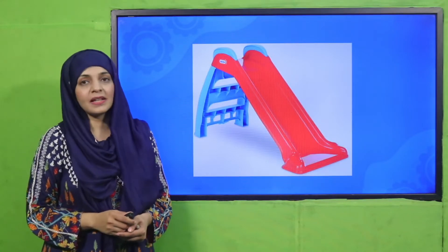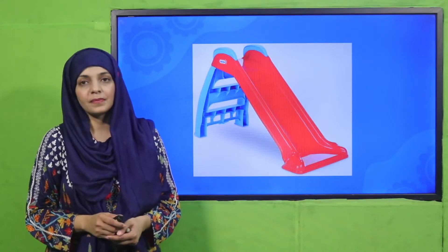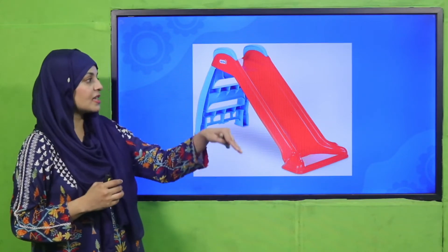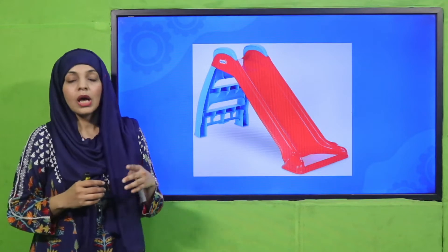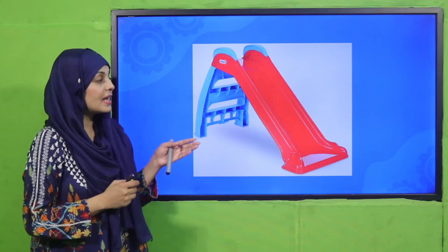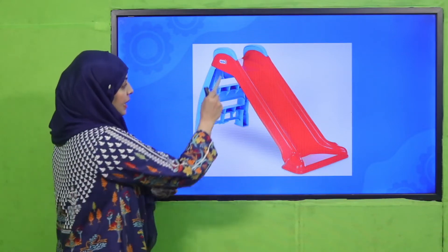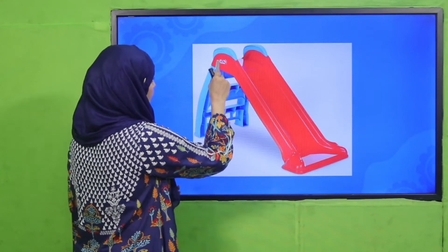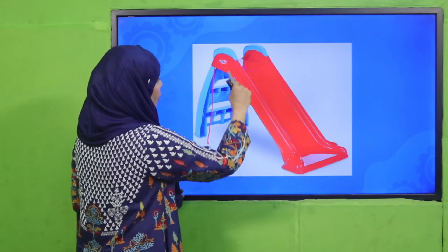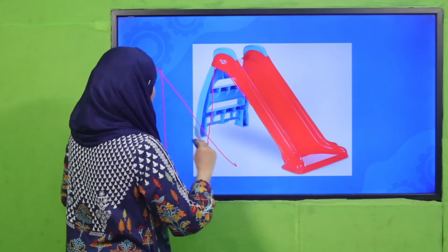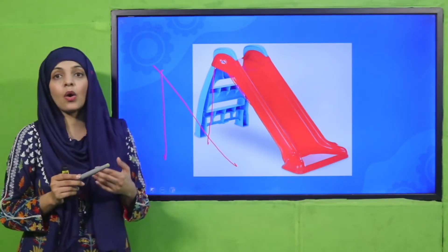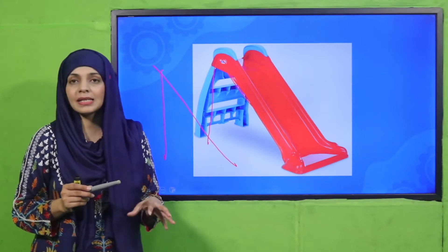Here you can see a slide — you climb up the stairs and then slide down. Do you know what its scientific name is? This is an inclined plane. 'Inclined' means tilted towards a support. This is a plane which is inclined. Any such thing which is in the form of a ramp, we call an inclined plane, and this is a simple machine.